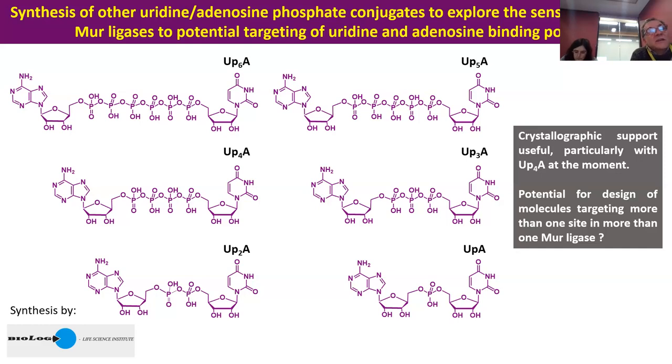We don't have any crystallographic data yet, but we believe there is potential for the design of molecules that may be able to target both sites within a particular Merligase and therefore multi-target within the same protein sequence. Question from the group: if the molecules are acting independently through each head group, why can't you just add the two of them together rather than covalently link them? That is another experiment coming up — a prediction would be that UDP would vastly potentiate the inhibitory potency of ADP. What we'd like, once we get crystallography, is the possibility of designing something more drug-like, since you don't really want all those phosphates.